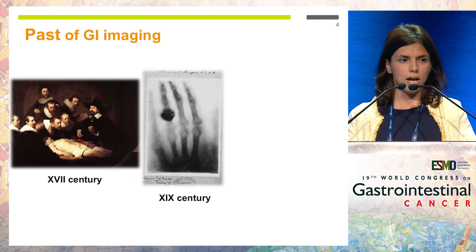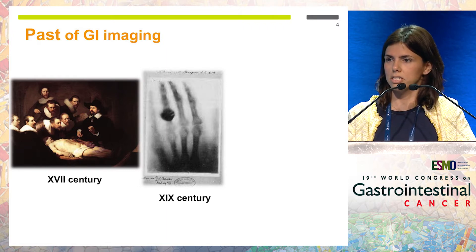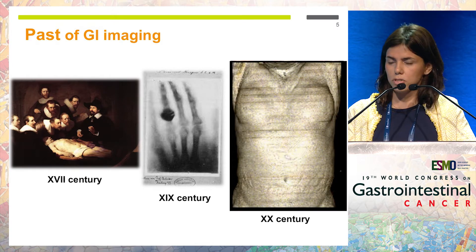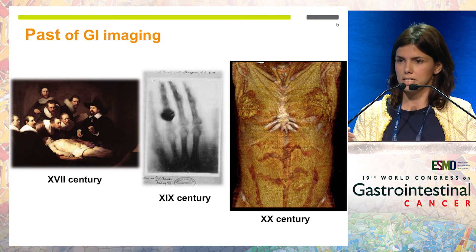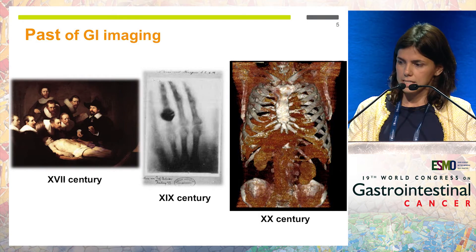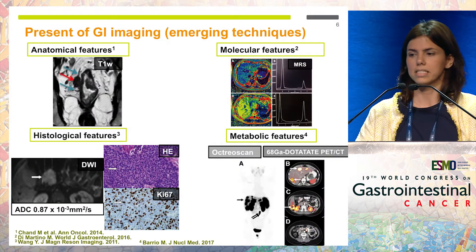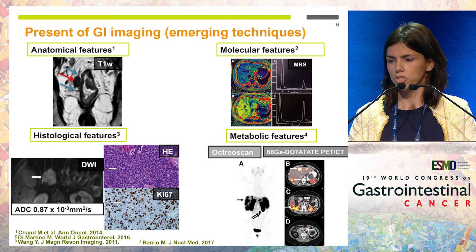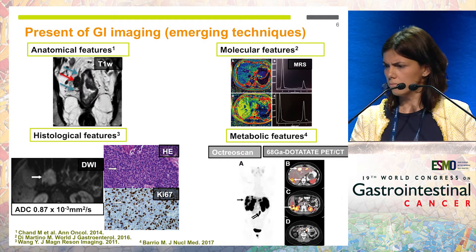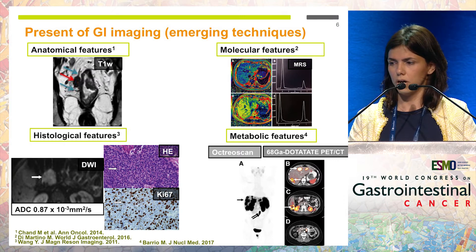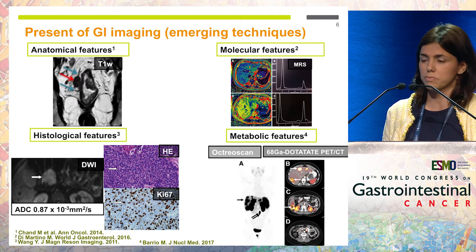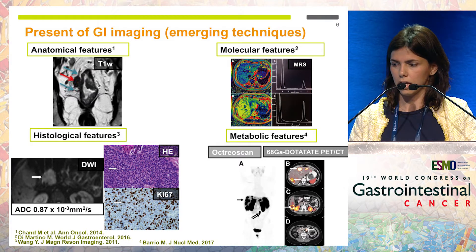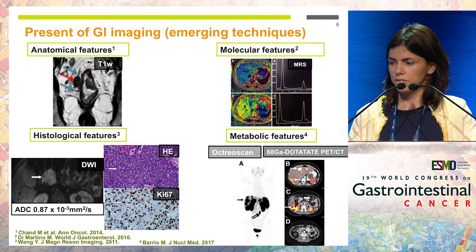Advances in imaging always go hand-in-hand with advances in technology. In the 20th century we were able to perform thousands of those simple x-rays in just a few seconds. Since then many other imaging techniques have been developed. Currently we are able to give precise information about the anatomy of the tumor — but not only that. We can also give relevant information about molecular features with spectroscopy MRI, tumor cellularity with diffusion MRI, and even metabolic features of the tumor with PET.